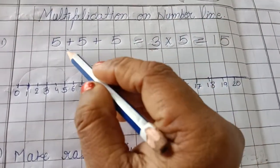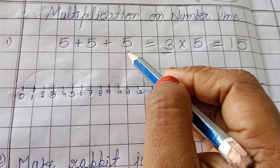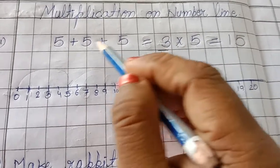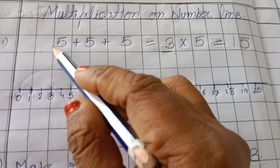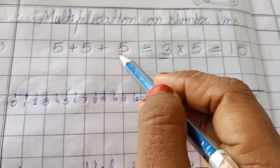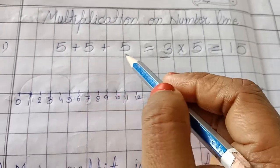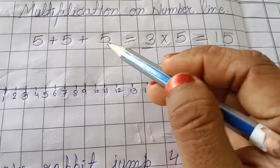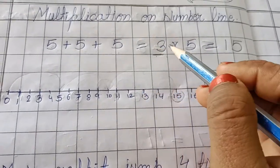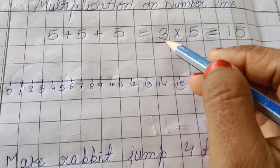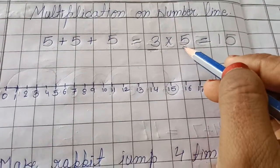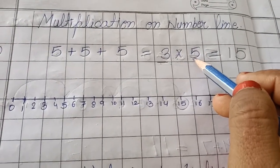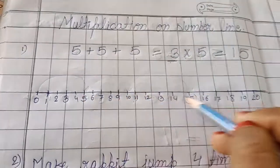Here 5 plus 5 plus 5 — since we know that multiplication is repeated addition, that means 5 is added to itself 3 times. So when we write down this repeated addition in multiplication form, we write it as 3 times 5.